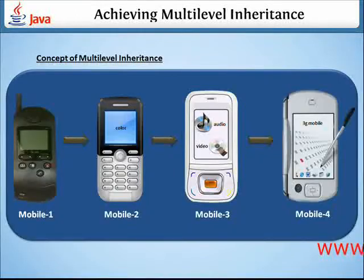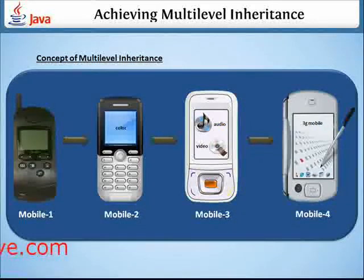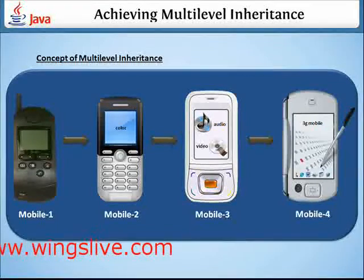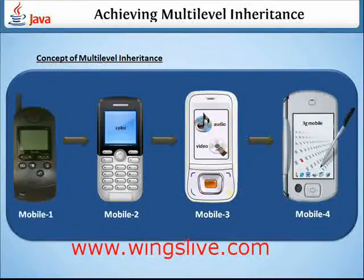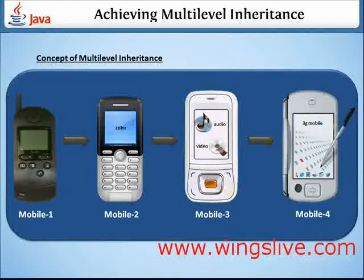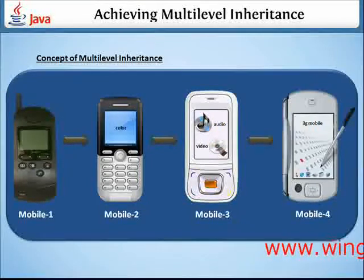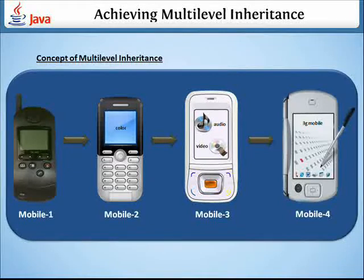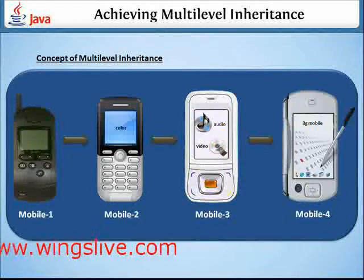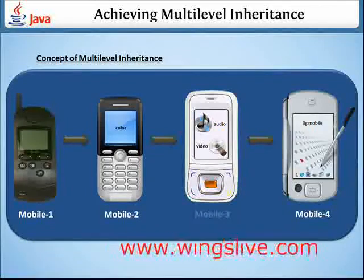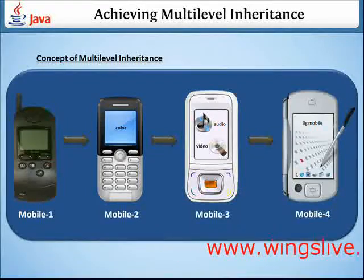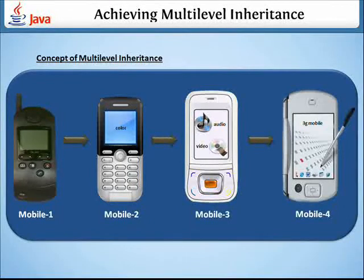Now you are looking at the figure that shows how the concept of inheritance is obtained among various mobile phones. The first mobile contains only the basic functional properties of cell phones. The second mobile inherits all the functions of the first mobile, but it belongs to the color family. Then the third mobile inherits the functions and the colors, but it has special features like audio and video.